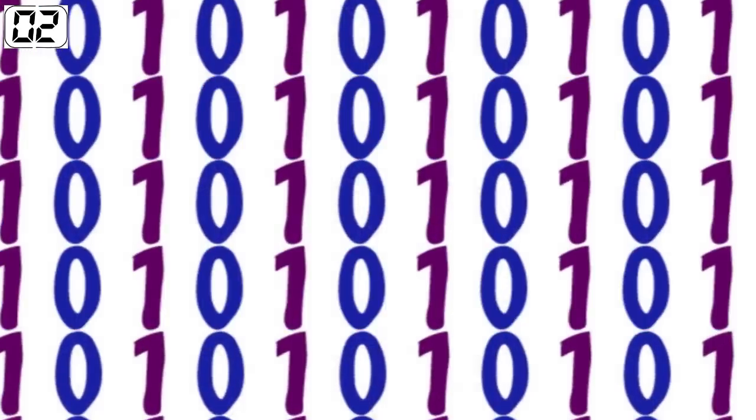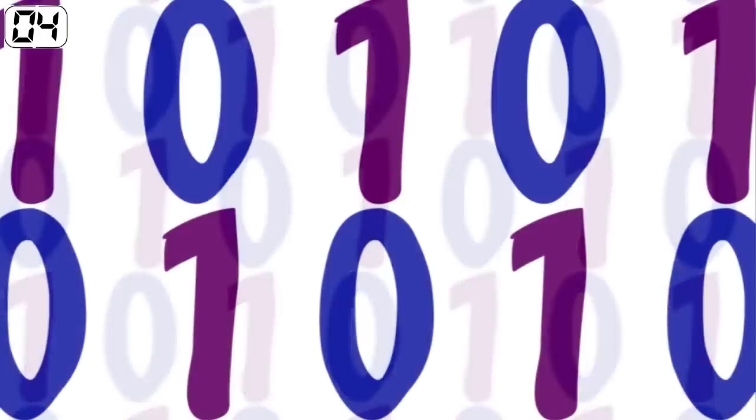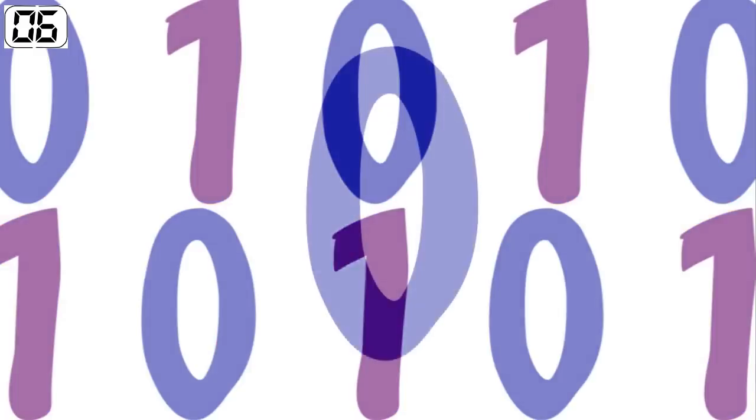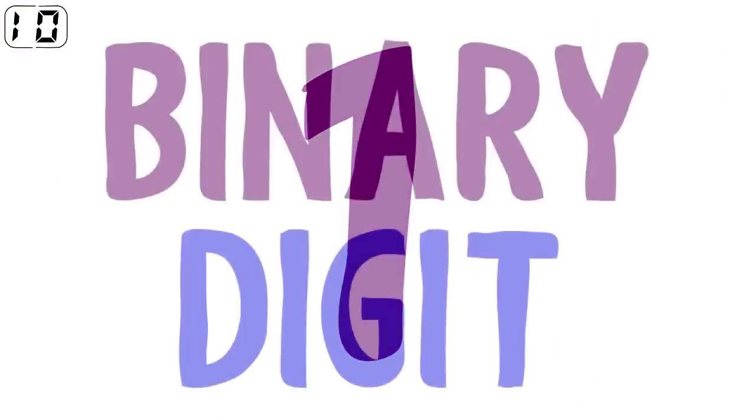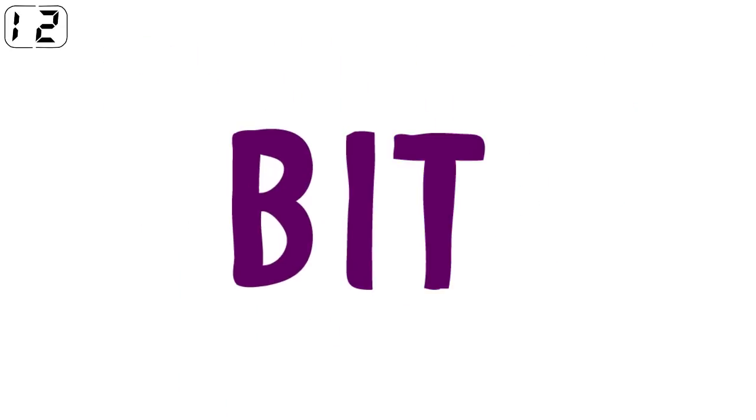First up, we need to know that a bit is the smallest unit of data in computing. A bit can have one of two values, usually 0 and 1. The word bit is a contraction of the term binary digit.